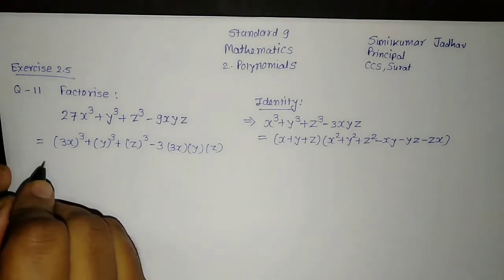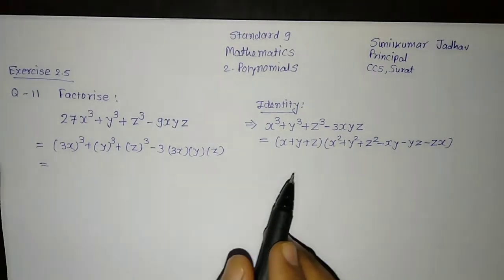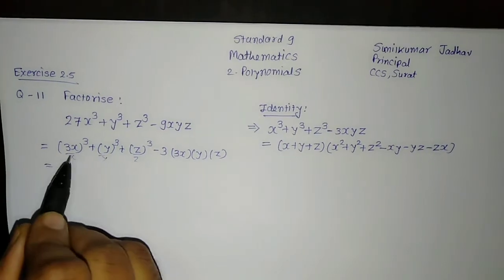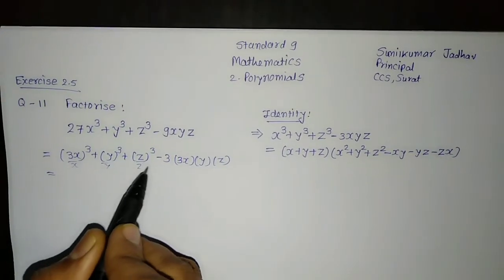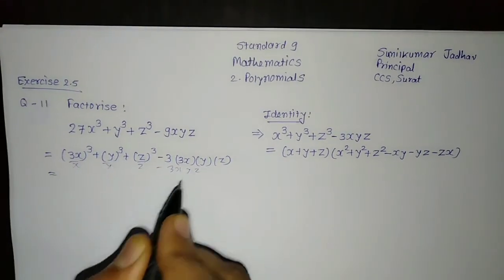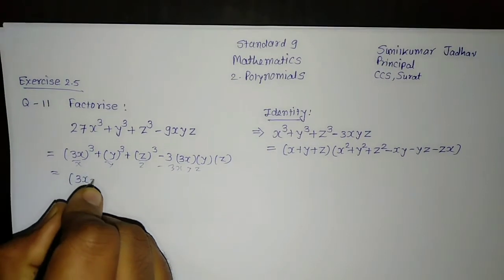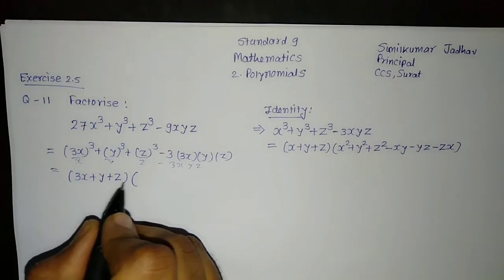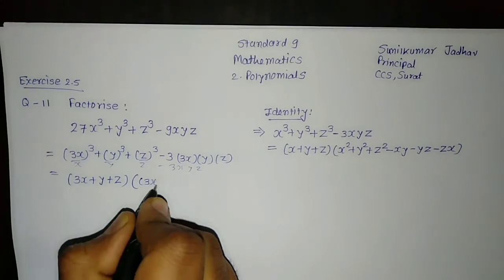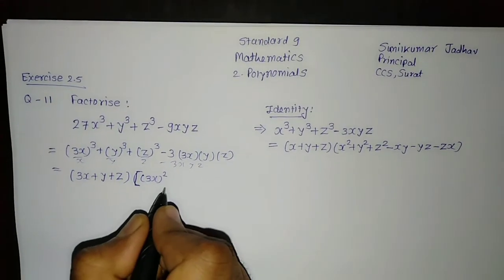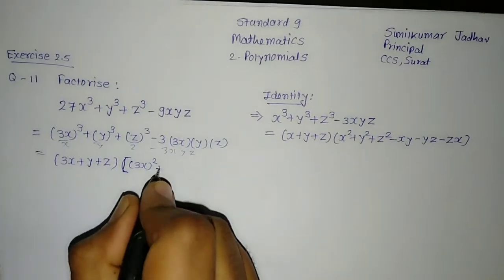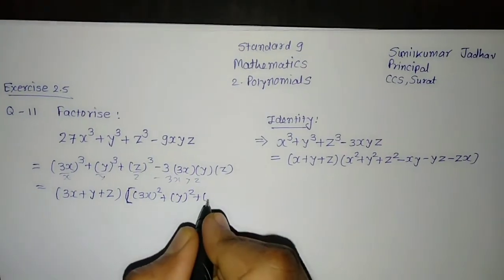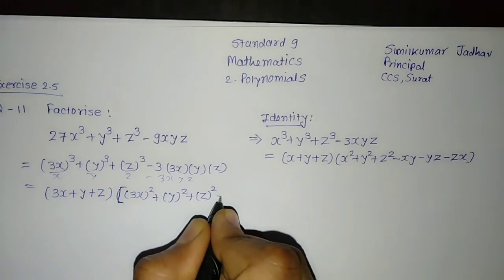In the formula, the first term x corresponds to 3x, the second term y corresponds to y, and the third term z corresponds to z. So x³ plus y³ plus z³ minus 3xyz becomes: (3x + y + z) times another bracket. For the second bracket, first term squared: (3x)² equals 9x²; plus y²; plus z².